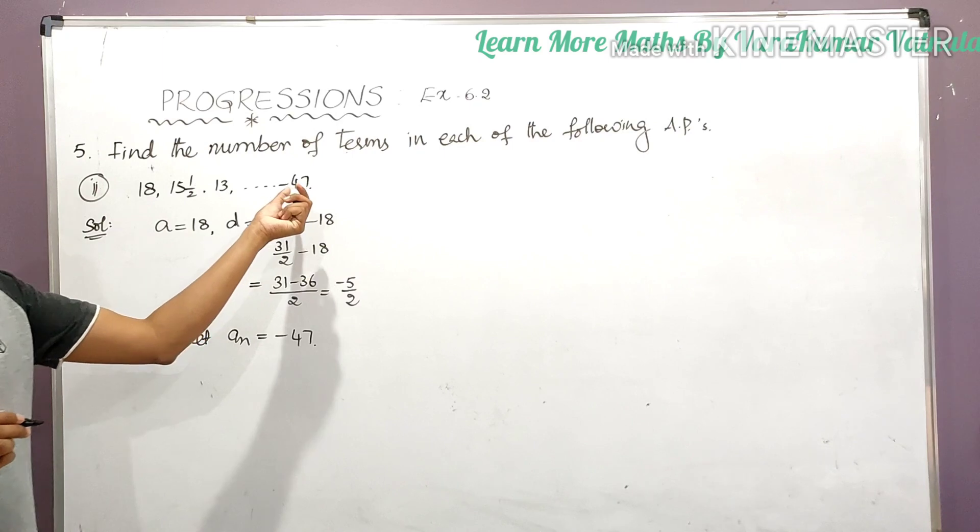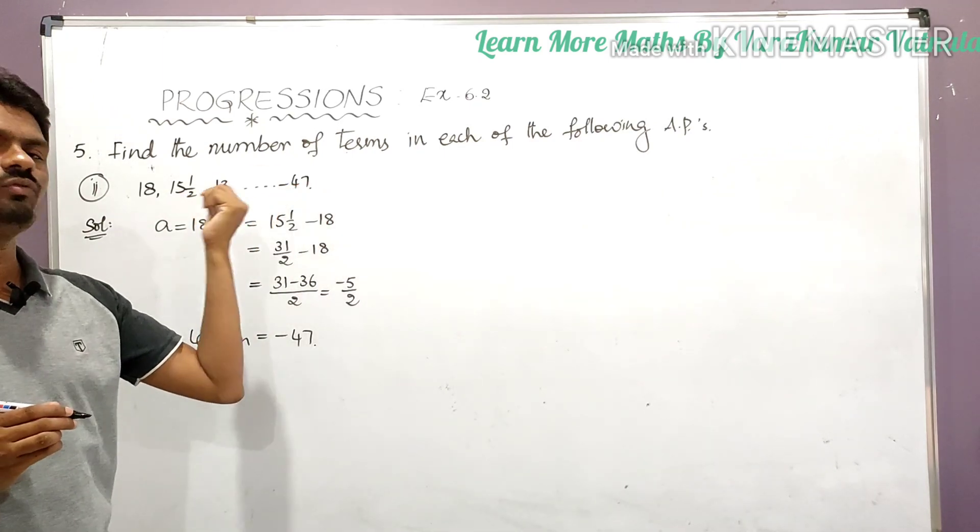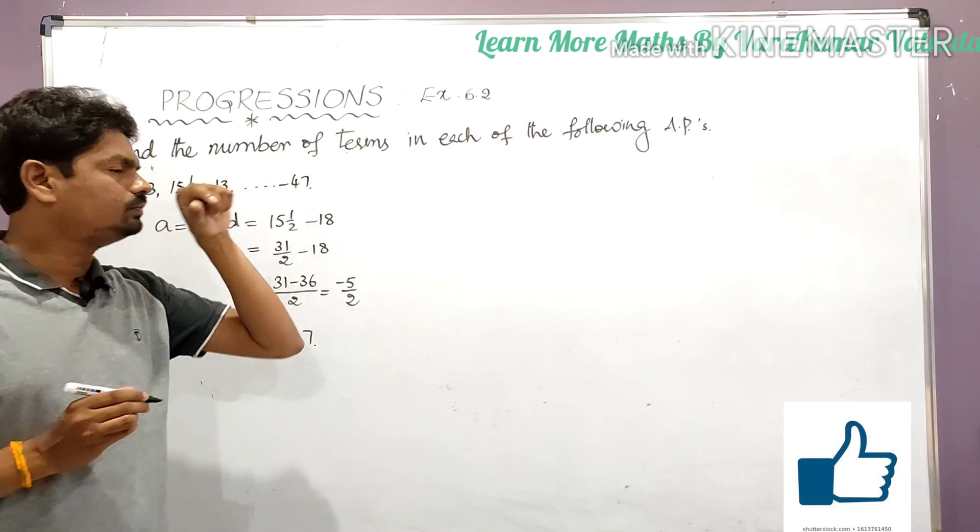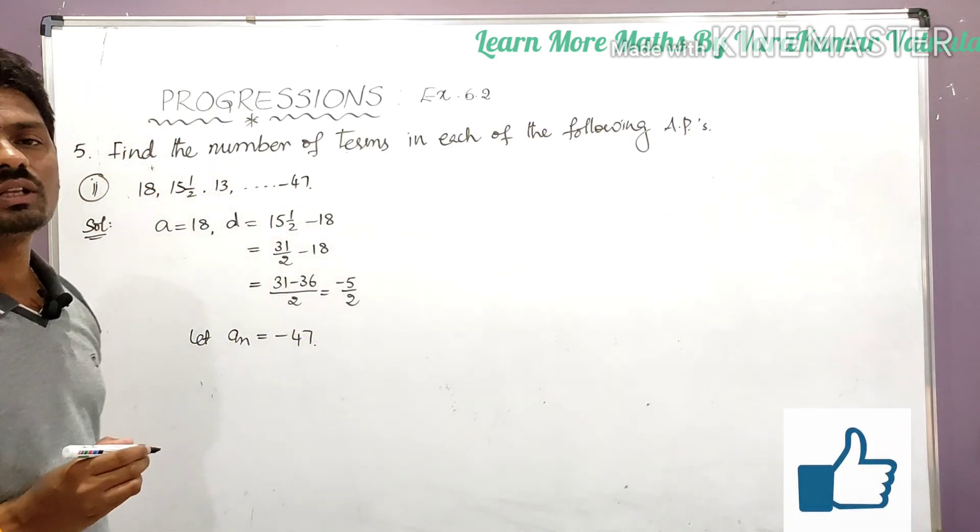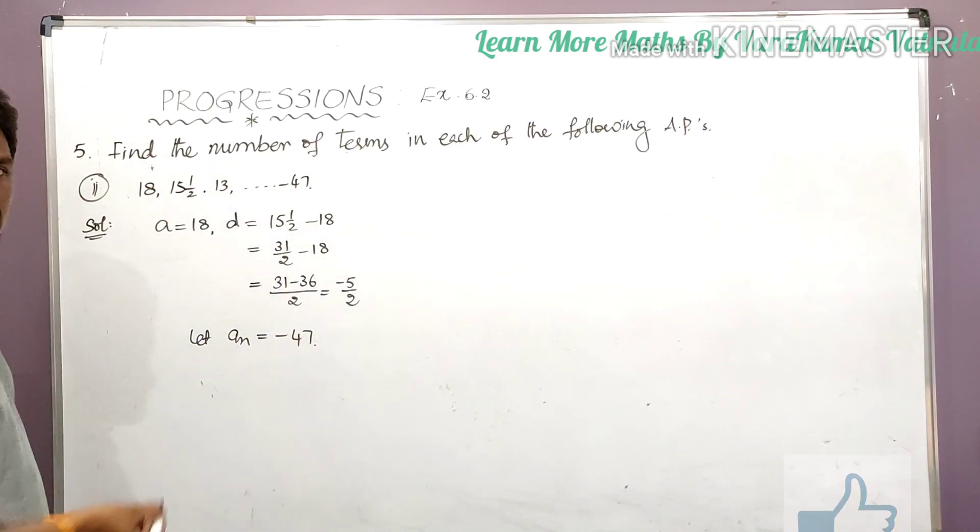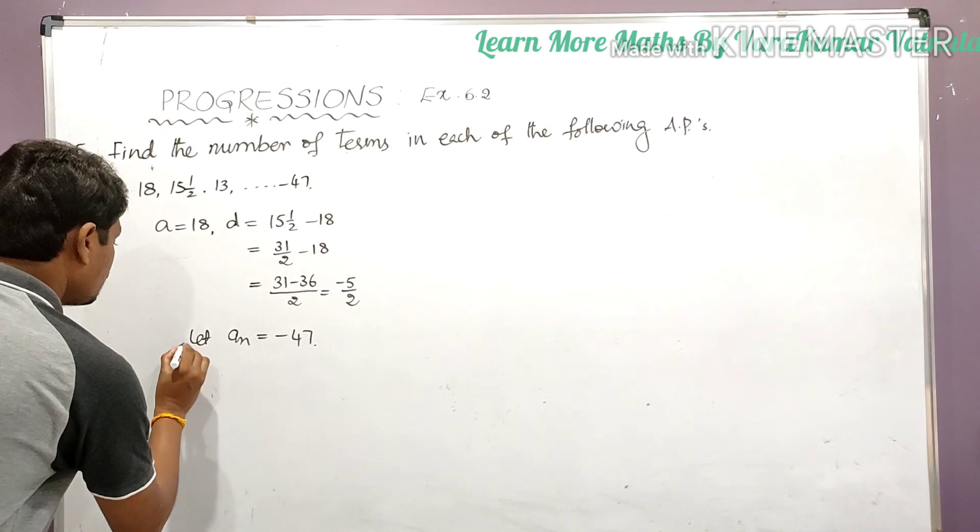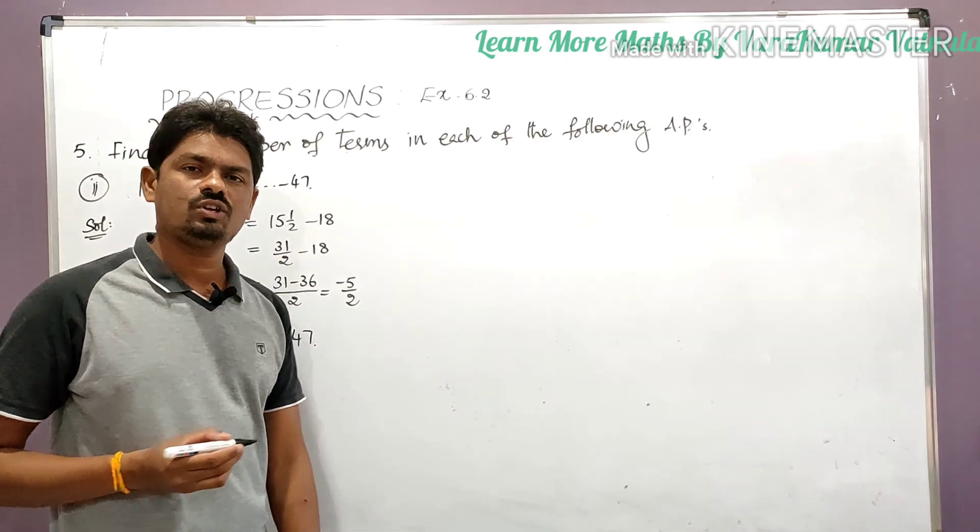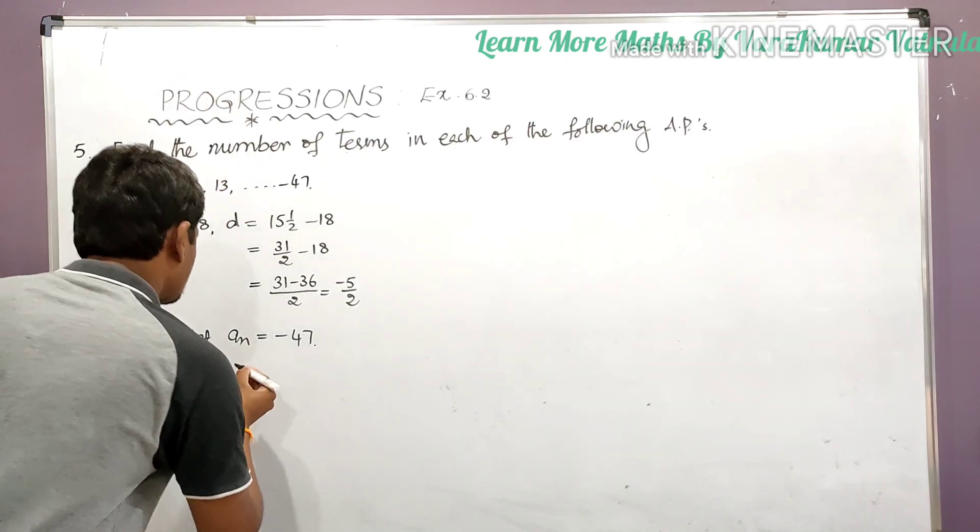Suppose if it is a 20th term, there are 20 terms in the given AP. If it is 30th term, there are 30 terms in the given AP. So let a_n is equal to minus 47, but we know in an arithmetic progression the nth term a_n is equal to what? a plus (n minus 1) into d.